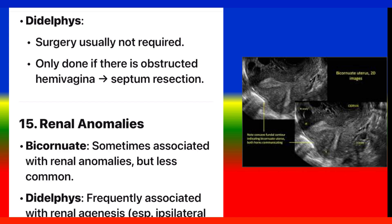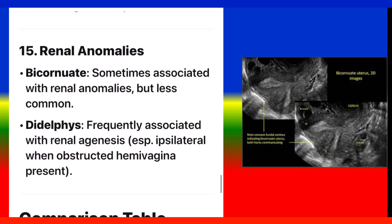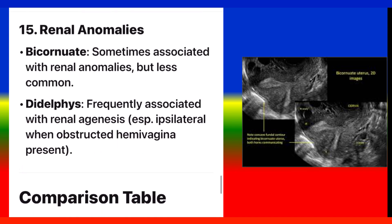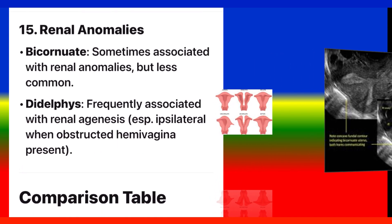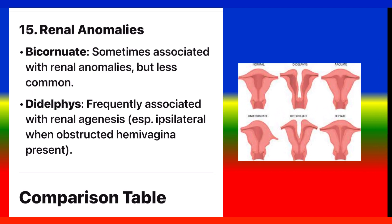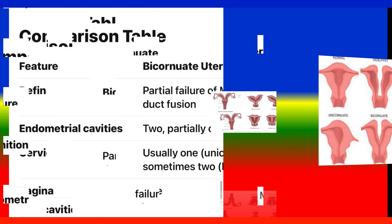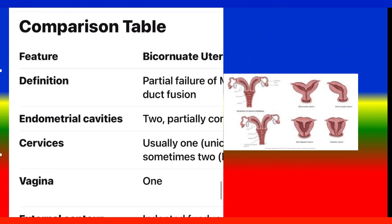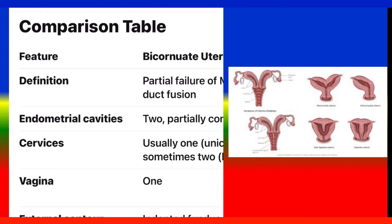Point 15: Renal anomalies. Bicornuate: sometimes associated with renal anomalies, but less common. Didelphys: frequently associated with renal agenesis, specifically ipsilateral renal agenesis when an obstructed hemivagina is present.